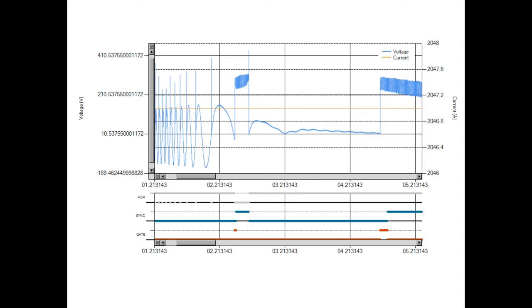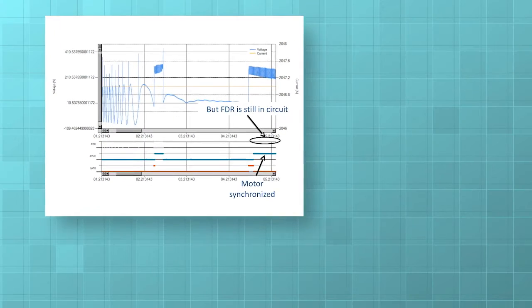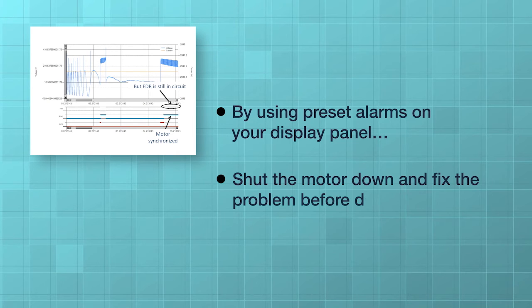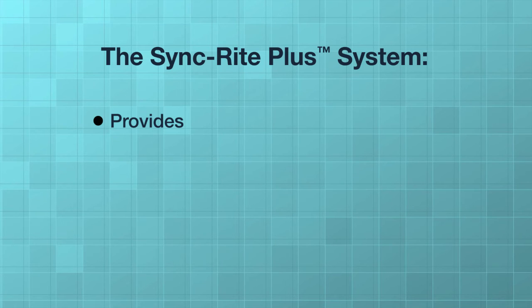By identifying these problems graphically, you can provide a quicker diagnosis of the root problem and reduce your downtime. This screen shows the status of the field discharge resistors, also known as FDRs. If the FDRs stay in the circuit after a motor synchronizes, they can burn up.